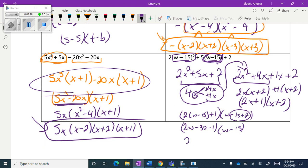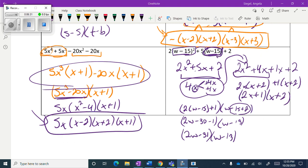So my final answer is 2w minus 31 times w minus 13. And this is my final answer, and we are done with this lesson.